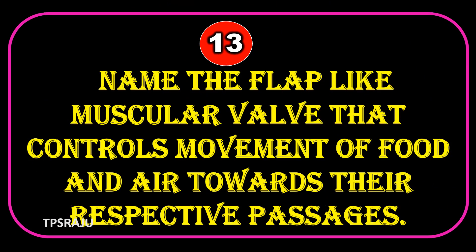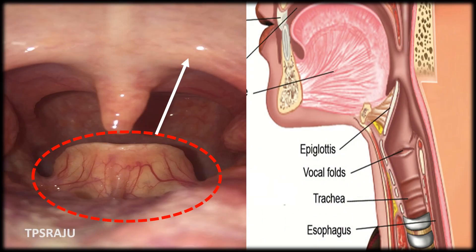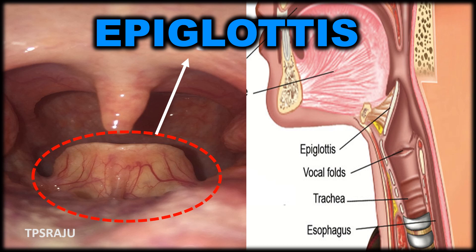Name the flap-like muscular valve that controls the movement of food and air towards their respective passages. Epiglottis.